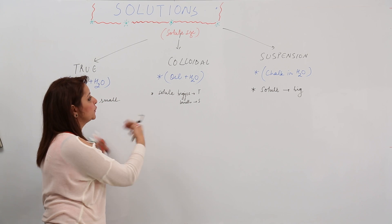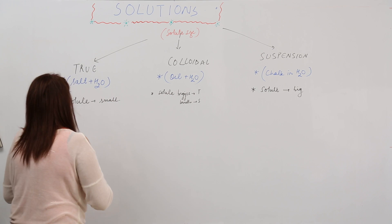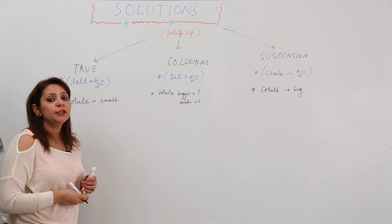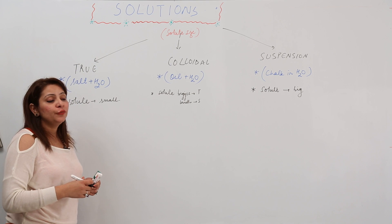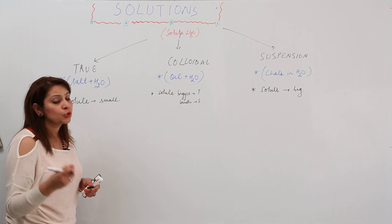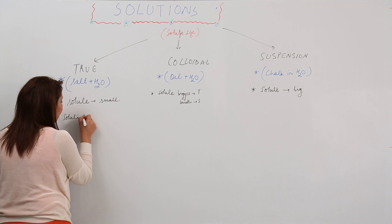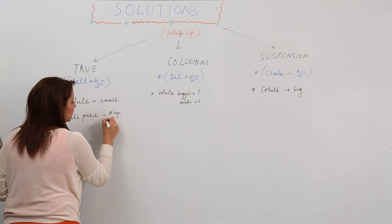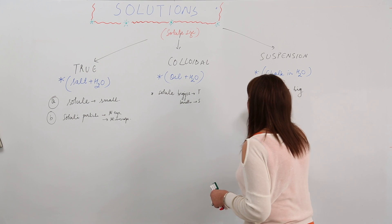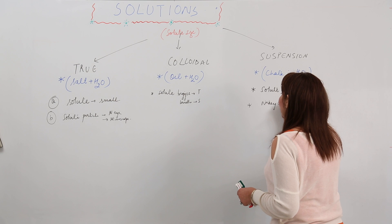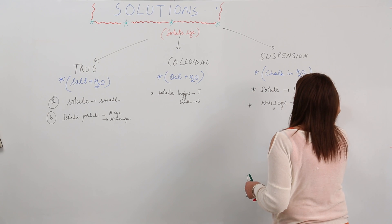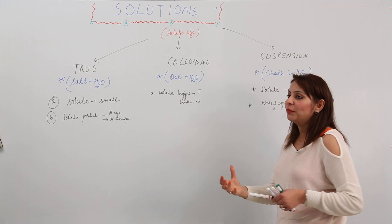The second property is visibility. When you dissolve salt in water, you don't see the salt particles individually — they can't be seen with the naked eye or even with a powerful microscope. In suspension, the particle size is so big that with the naked eye alone we can see the solute and solvent particles separately, no microscope required.